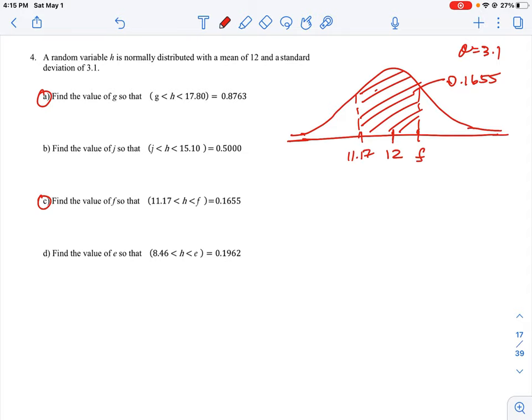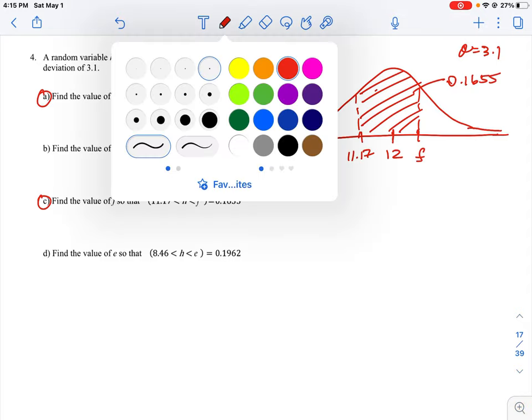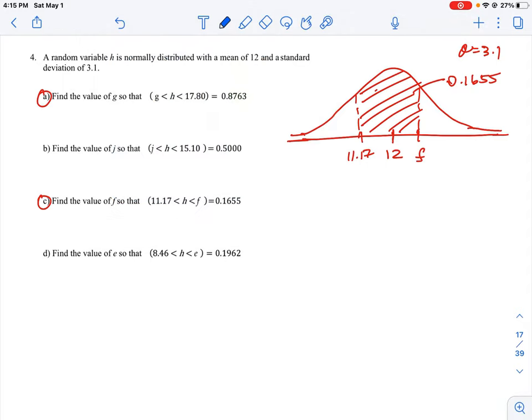So we're going to solve this very similar to the way we did the last one. The first thing we need to do is find the area. We're essentially going to calculate the missing area and then add it to the defined area here. Because remember, we're after the letter F—that means we need to calculate the endpoint.